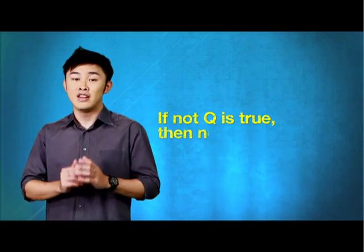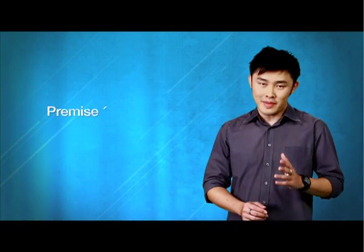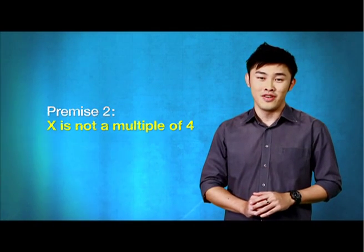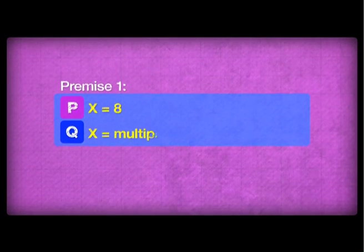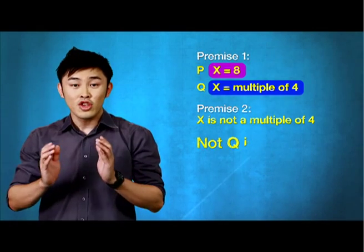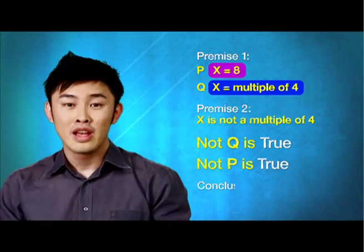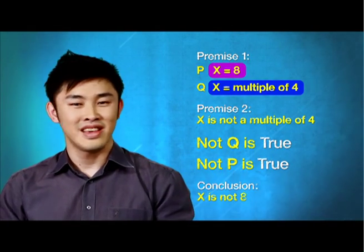Using the same reasoning, another argument is: if not Q is true, then not P is true. Let's take a look at this example. Premise one: if X equals 8, then X is a multiple of 4. Premise two: X is not a multiple of 4. Looking at P and Q and the second premise — since not Q is true, then not P is true. Therefore, X is not 8.